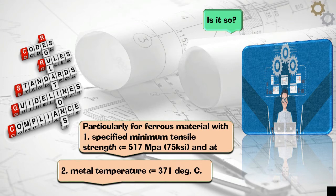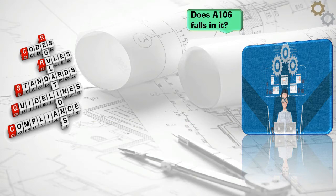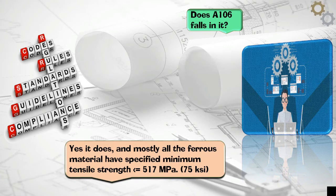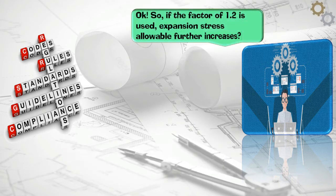Does A106 fall in it? Yes it does, and mostly all the ferrous materials have specified minimum tensile strength less than or equal to 517 MPa, 75 Ksi. Okay.